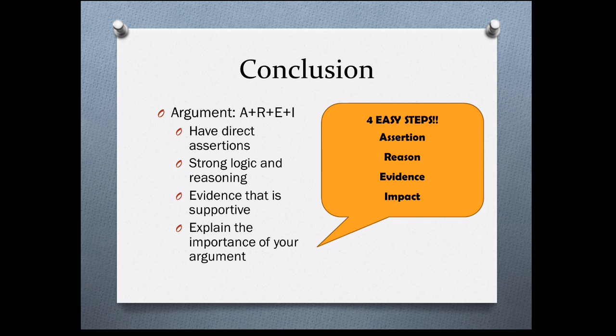In conclusion, we talked about how to build an argument. An argument has not three but four main parts: you should try to have direct assertions, strong logic and reasoning, evidence that is supportive, and you should explain the importance of your arguments with the impact. With these four parts, you can now make your own arguments and show how they are important.